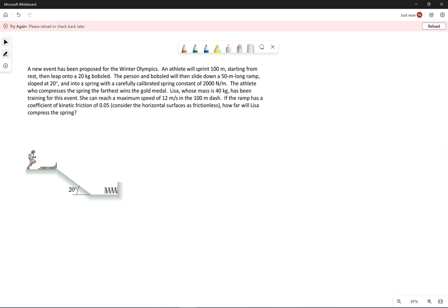Okay, one more example. This one's kind of silly, but that's okay. A new event proposed for the Winter Olympics: an athlete is going to sprint 100 meters, starting from rest, leap onto a bobsled, the person in bobsled will slide down a ramp and into a spring, and whoever compresses the spring the farthest wins the gold medal.